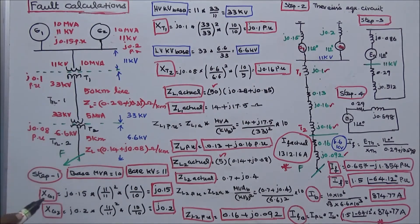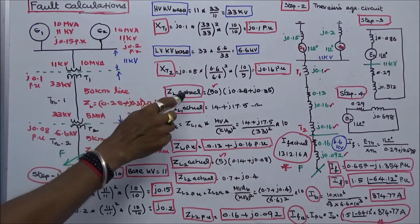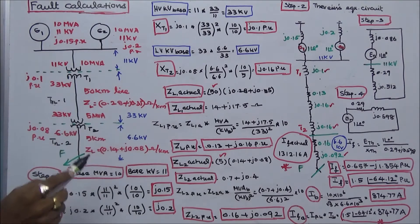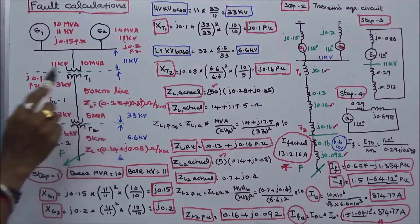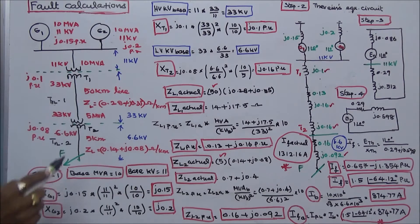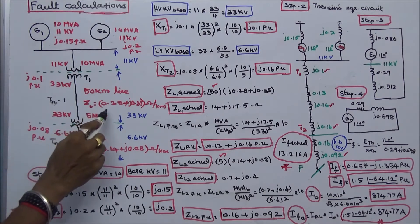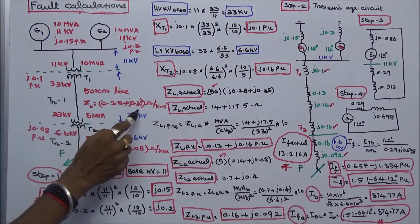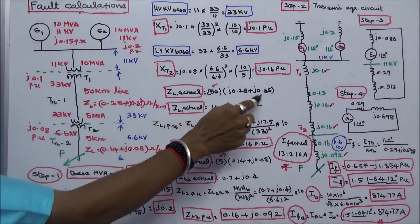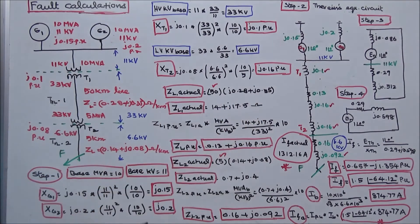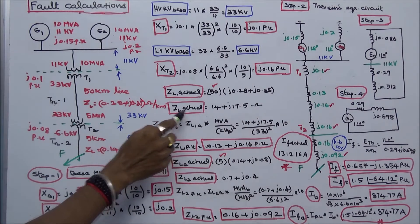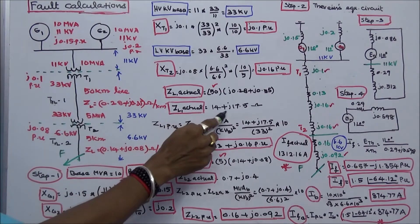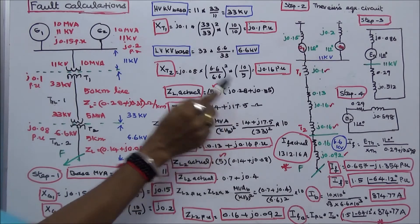Next, I calculate the actual impedance of Transmission Line 1. The length is 50 km, and the impedance is 0.28 + j0.35 ohms per km. Therefore, the actual impedance of Transmission Line 1 is 14 + j17.5 ohms.